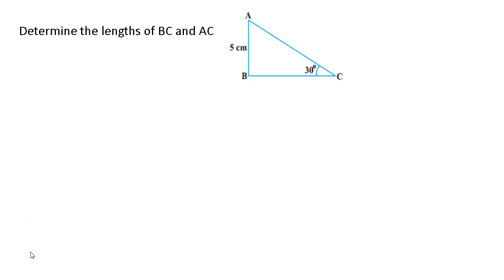Here one right angle triangle is given to us. In this triangle AB is given as 5 centimeters, this angle is given as 30 degrees, and obviously this angle is 90 degrees. The question asks us to determine the lengths of BC and AC. Since one angle is given as 30 degrees, we can use trigonometric ratios related to the 30 degree angle.